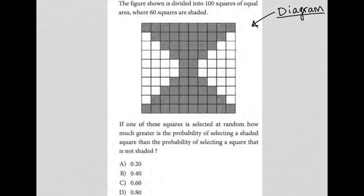The question says the figure shown is divided into 100 squares of equal area where 60 squares are shaded. If one of these squares is selected at random, how much greater is the probability of selecting a shaded square than the probability of selecting a square that is not shaded?